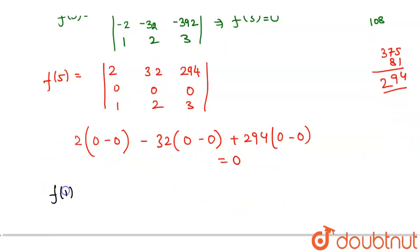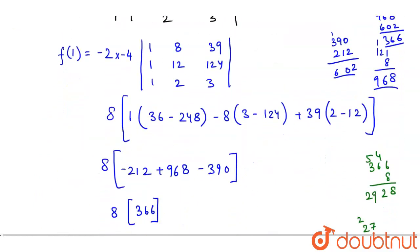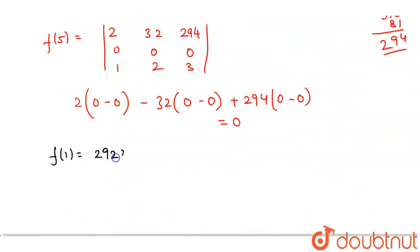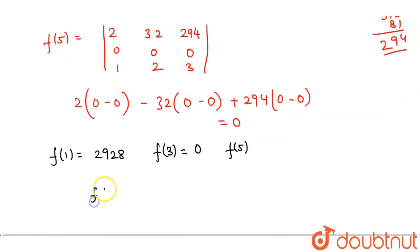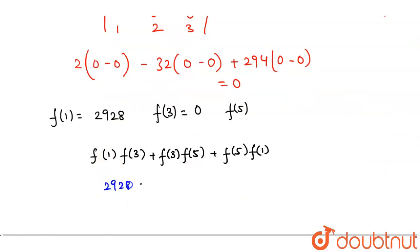So I can say that my f of 1 is 2928, f of 3 is 0, and f of 5 is also 0. And I had to find the value of f of 1 into f of 3 plus f of 3 into f of 5 plus f of 5 into f of 1. So 2928 multiplied by 0 plus 0 into 0 plus 0 into 2928, so this is 0, this is 0, this is 0. My answer is 0. This is my answer. I hope you understood the explanation, thank you.